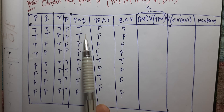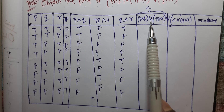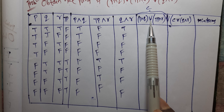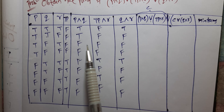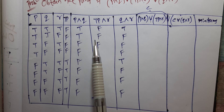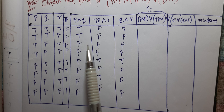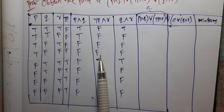Next, the R symbol. What is R? The R symbol means any two statements false gives false.